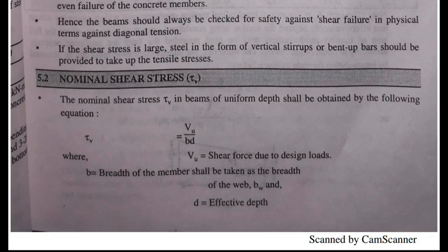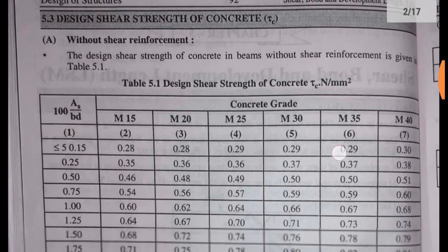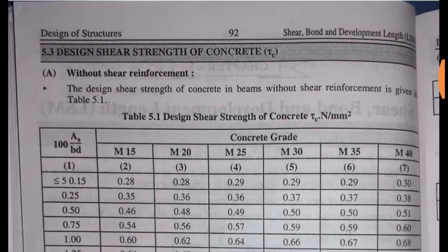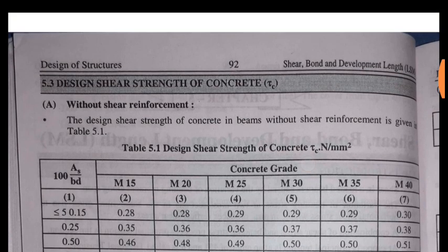The next important term is tau c. This is the design shear strength of concrete. The concept is the value of the design strength of the concrete — what is tau c. In RCC it is totally numerical and you can understand it from the design values.